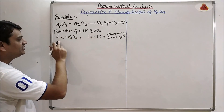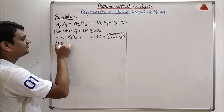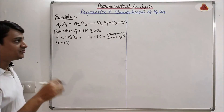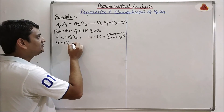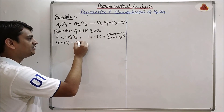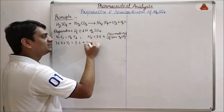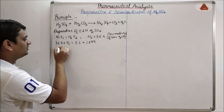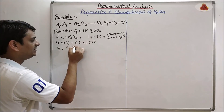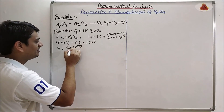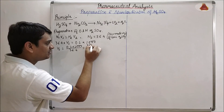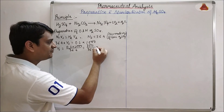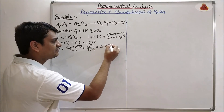Now we will put this value into the equation. It will be 36.4 × V1. We need to determine the volume of concentrated H2SO4 to produce 0.1 normal H2SO4, so 36.4 × V1 = 0.1 × V2. We are preparing 1000 ml, so V2 = 1000 ml. Solving: V1 = (0.1 × 1000) / 36.4 = 100 / 36.4 ≈ 2.75 ml.